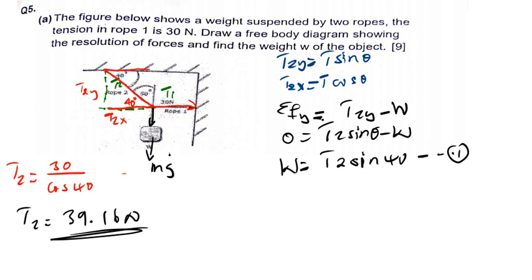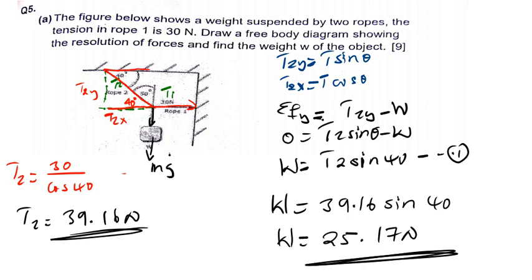After finding T2, I can now go ahead and find W, which is going to be T2 is 39.16 sine of 40. The weight force they want us to find is 39.16 sine of 40, which is 25.17 Newtons. That is the answer for this question. The weight force is 25.17 Newtons.